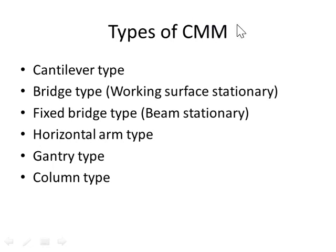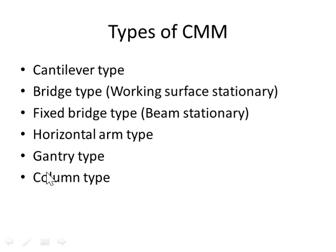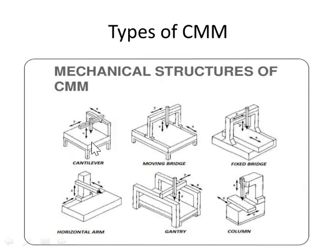Before that, we are going to discuss about the types of CMM. The first one is cantilever type, the second one is bridge type with working surface stationary, the third one is fixed bridge type where the beam is stationary, the fourth one is horizontal arm type, the fifth one is gantry type, and the sixth one is column type.